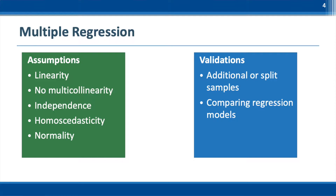Missing values and outliers also need to be detected and handled. As we noted in the normality video, transformation has been done, but transformed variables make the results interpretation harder. In this example, we will first run the analysis with the original data, then repeat the process with the transformed variables and compare the results.